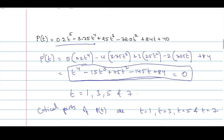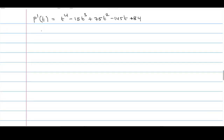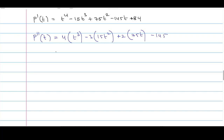Now let us compute P''(t) at these four points and check the sign — whether it is positive or negative. P''(t) = 4t³ − 3×15t² + 2×75t − 145. Simplifying, we get 4t³ − 45t² + 150t − 145.